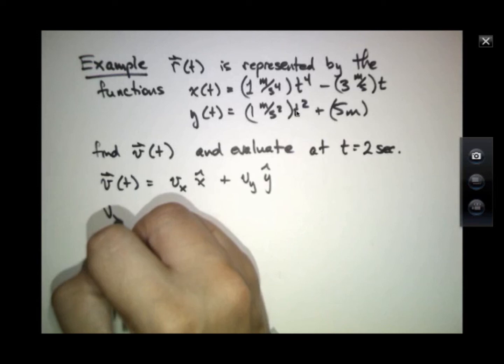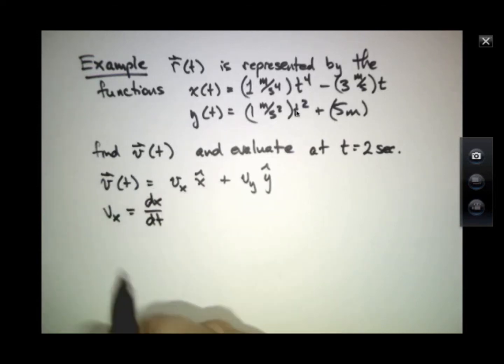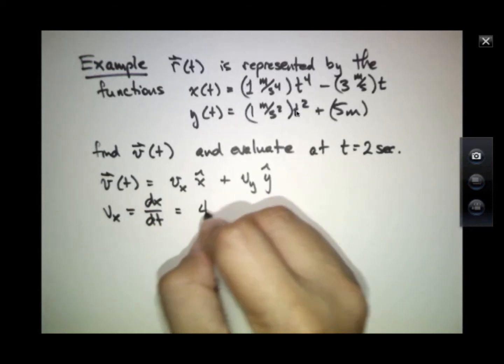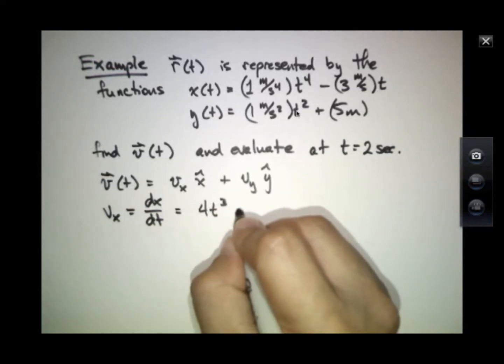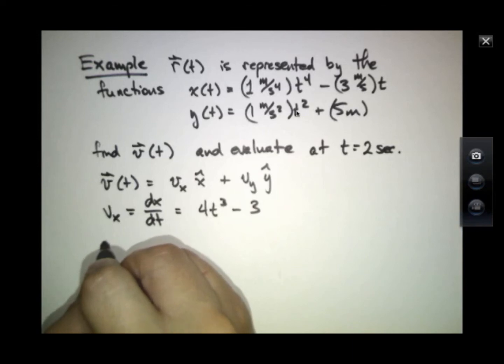So vx equals dx/dt, the time derivative of x, and that will equal 4t cubed minus 3. I'm ignoring the units, but remember what they are.